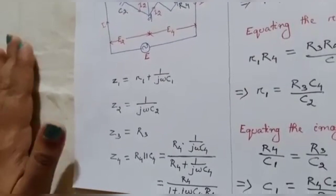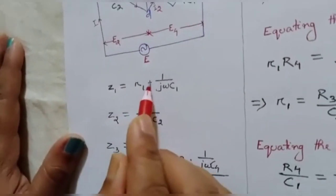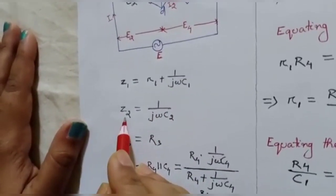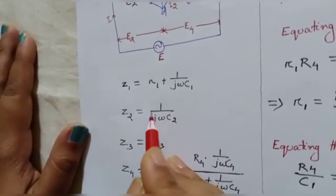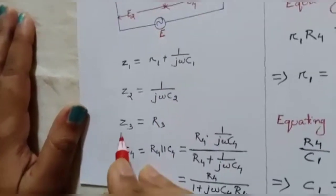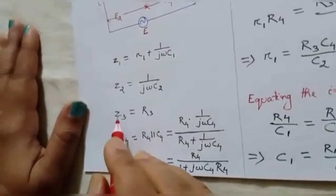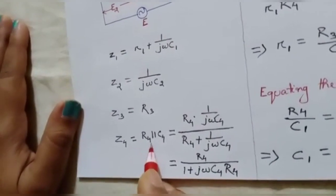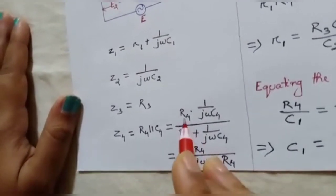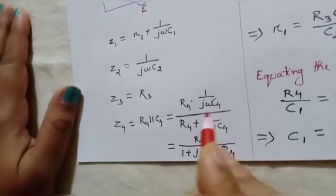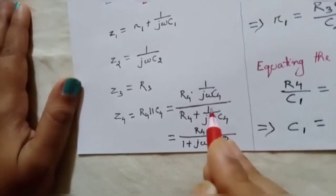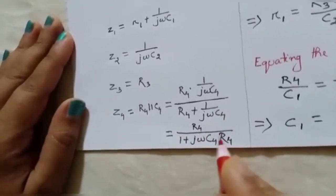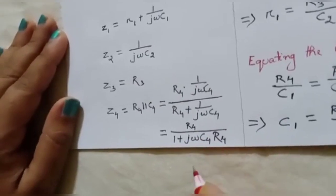Let's write down the equations for Z1, Z2, Z3, and Z4. Z1 is a simple RC circuit so Z1 equals R1 plus 1 over jωC1. Z2 is a pure capacitive branch so Z2 equals 1 over jωC2. Z3 is a pure resistive branch so Z3 equals R3. Z4 is the parallel combination of R4 and C4, so Z4 equals R4 divided by (1 plus jωC4·R4).